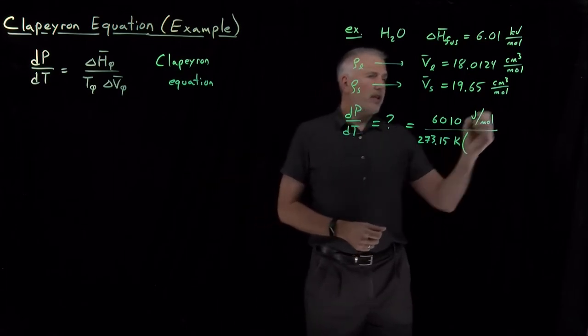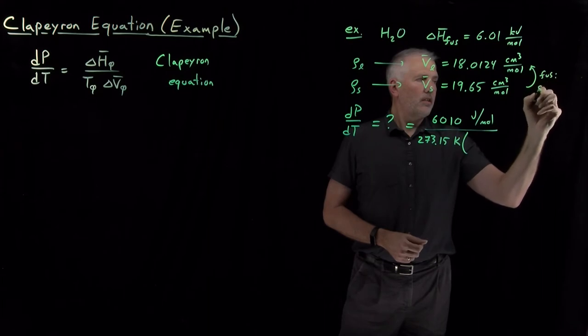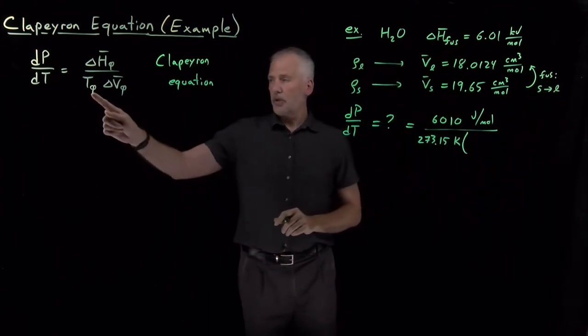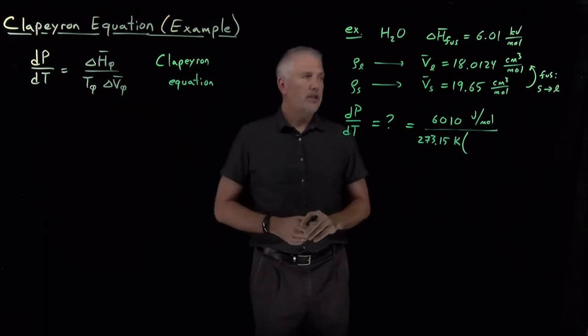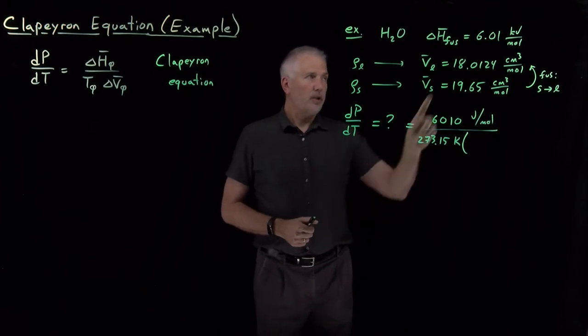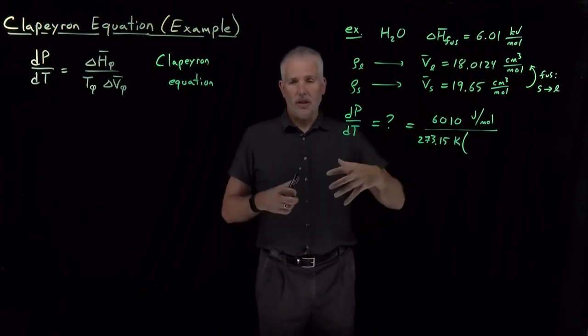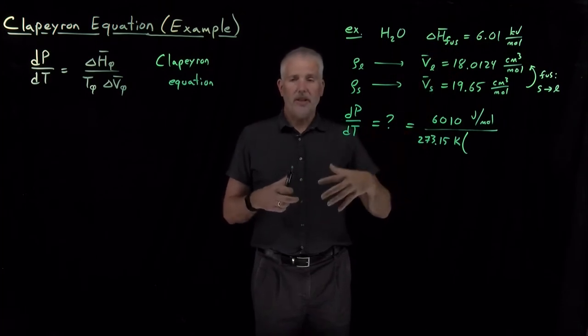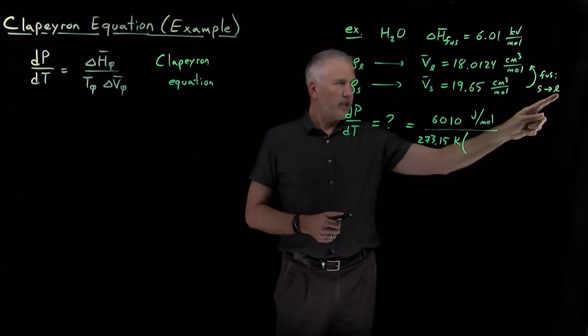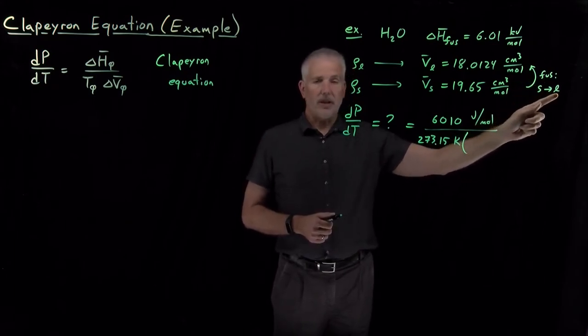And then we need the change in the molar volume for fusion. Remember the fusion process, when we say enthalpy of fusion, temperature of fusion, molar volume change upon fusion, the fusion process is melting, solid becoming liquid. It requires an input of 6 kilojoules per mole to convert lower enthalpy solid into higher enthalpy liquid. We have to make sure we're doing this in the right order. The change in volume upon fusion is the change when we go from solid to liquid.